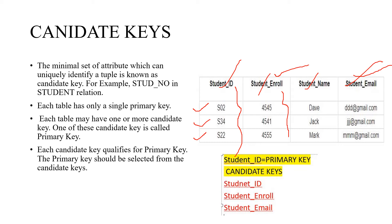But Student Name — we can't use Student Name alone as the primary key. Why? Because two students may have the same name, so there is a chance of duplicate values. Therefore, Student Name alone cannot be used as the primary key.